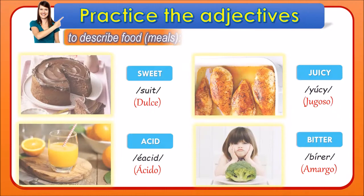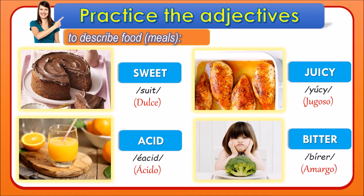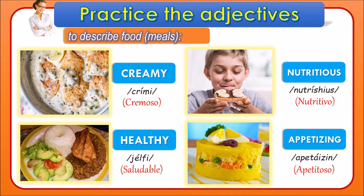Now we have another set of adjectives to describe meals. First we already had flavorful or tasty, hot, disgusting, and cold. Now we have sweet, juicy, acid, and bitter. For example, the broccoli is bitter — when something tastes bitter, we say bitter in English. Sweet is an adjective many of us use to describe desserts. Juicy — for instance, stews are juicy. And the orange juice is acid.